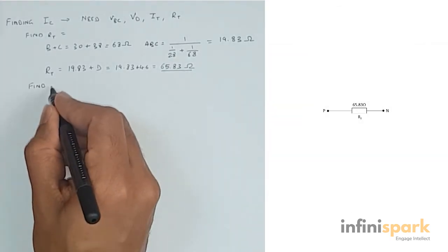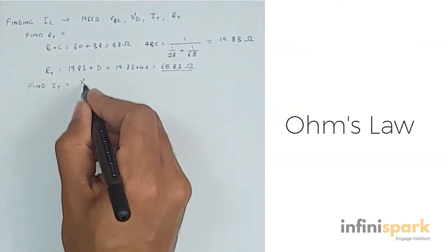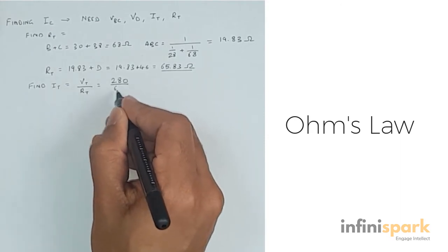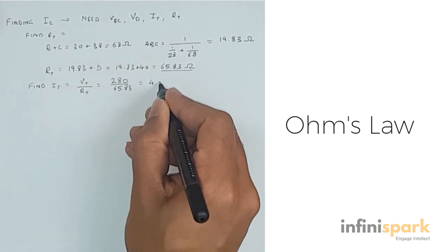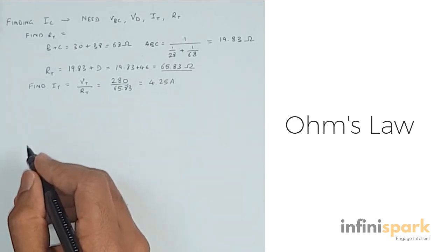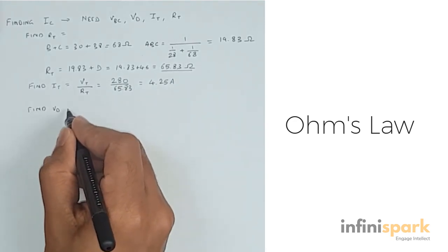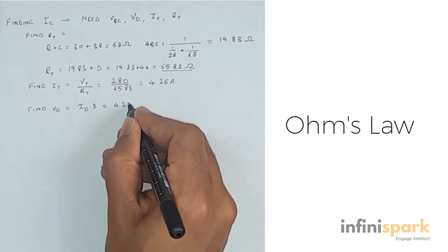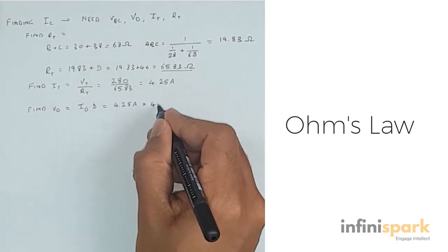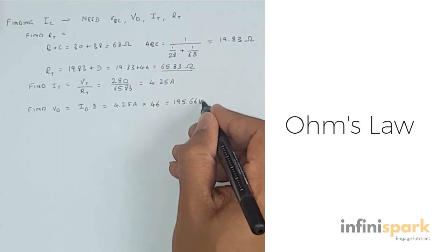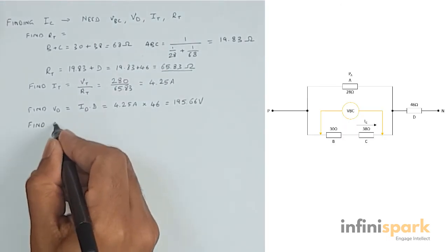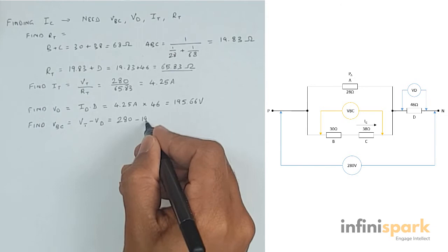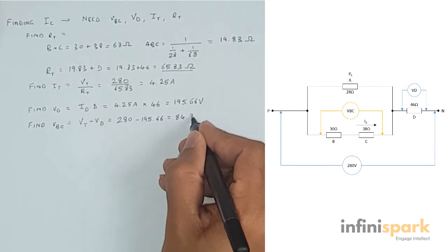Now that we have RT, we can find IT using Ohm's law. IT is equal to voltage total divided by resistance total, which gives us 4.25 amps. Let's use this to find VD. Using Ohm's law again, VD is equal to current total times D, which gives us 195.66 volts. Now we can find VBC, which will be total voltage minus VD, which is 84.34 volts.